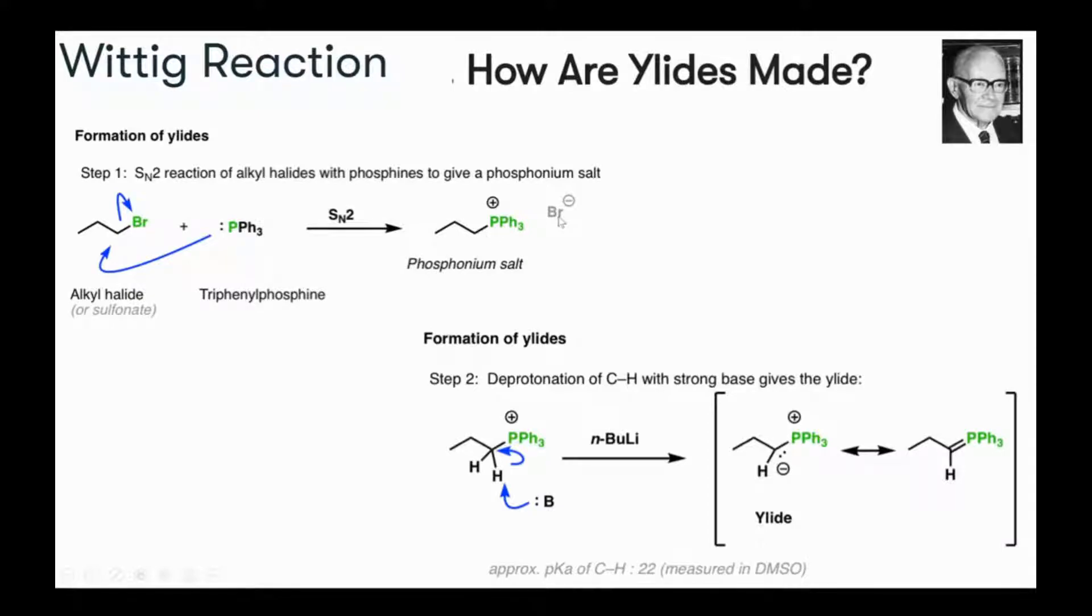What happens in the next step? A base comes into play. It could be n-butyl lithium or any base. The CH2 next to this positively charged phosphonium is acidic. The base picks this proton and generates a negative charge on this carbon, so it's an ion.